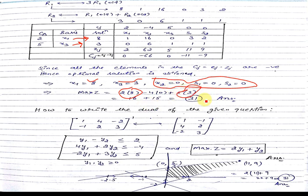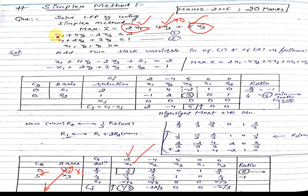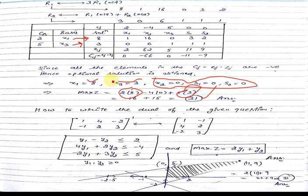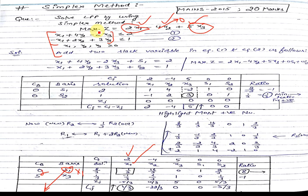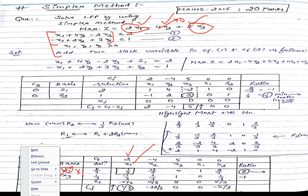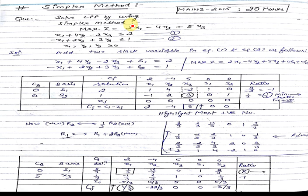The question also asked to write the dual form. The constraint matrix is the 2×3 matrix with rows [1, 4, -2] and [-1, 2, 3]. We take the transpose — rows become columns — to get the dual constraints, introducing dual variables y1 and y2: y1 - y2 ≥ 2; 4y1 + 2y2 ≥ -4; -2y1 + 3y2 ≥ 5.